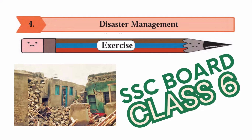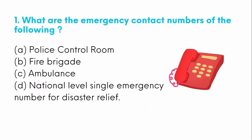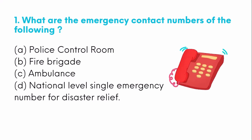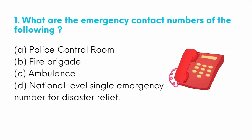Hello friends, today we are going to see our fourth chapter, that is Disaster Management. We are going to see the exercise of that. The first question is: what are the emergency contact numbers of the following? We have to write the emergency contact numbers of the following authorities: police control room, fire brigade, ambulance, and national level single emergency number for disaster relief.